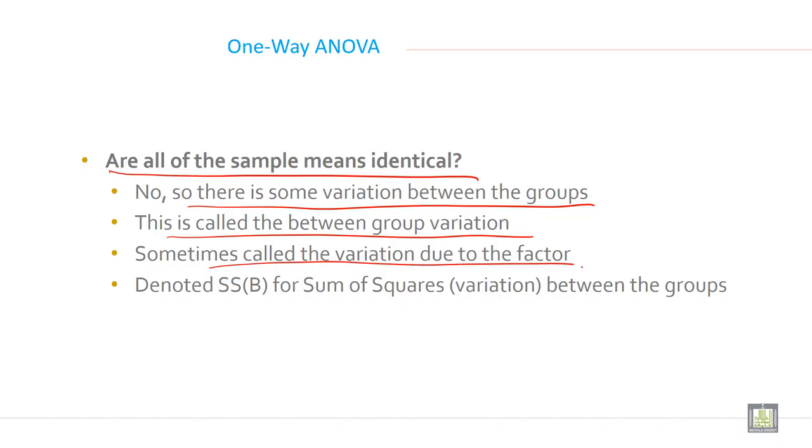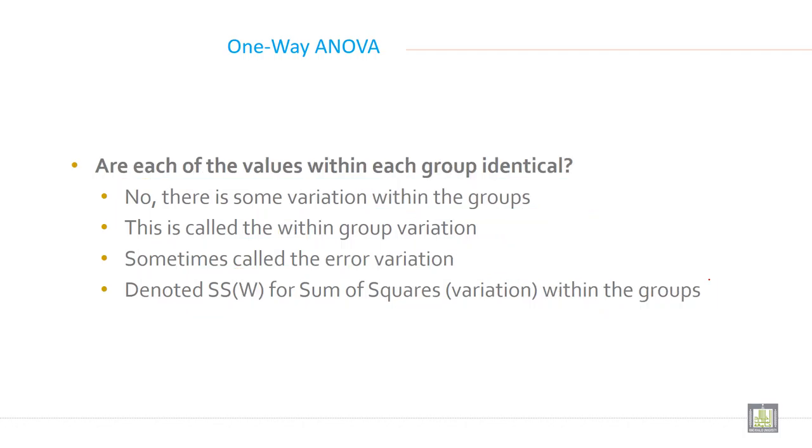Are each of the values within each group identical? No, there is some variation within the group. This is called the within group variation, sometimes called the error variation, or denoted SSW for sum of square variation within the group.